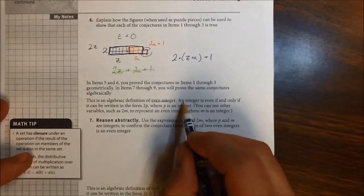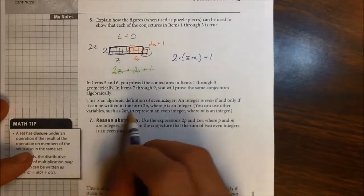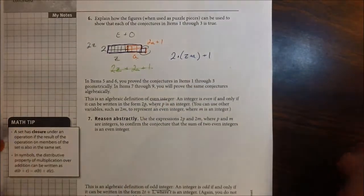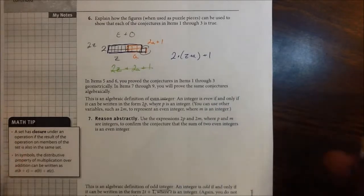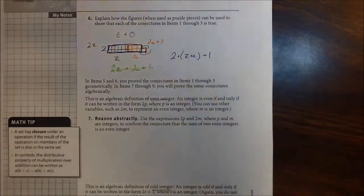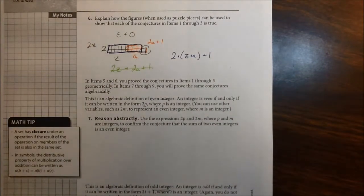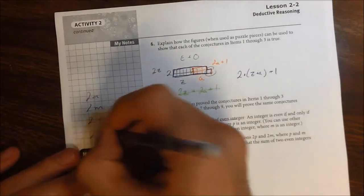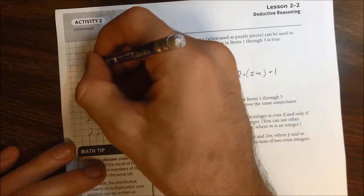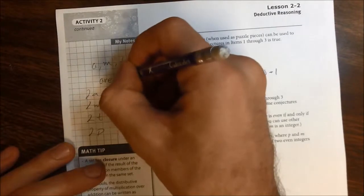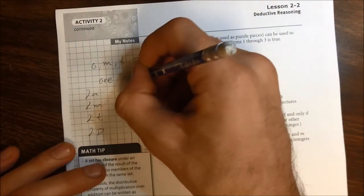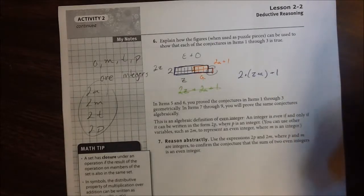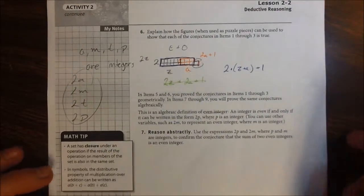They introduced two new definitions down here. The algebraic definition of an even integer: an integer is even if and only if it can be written in the form two times p, where p must be an integer. The book notes you can use any other variable — two times m, two times a, two times t — it doesn't matter what variable you use, as long as it is an integer. These would all represent even integers. You just take two times some integer.